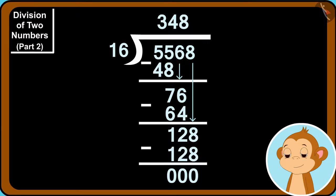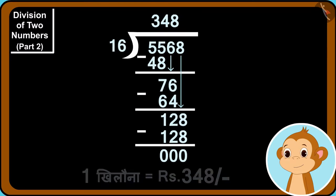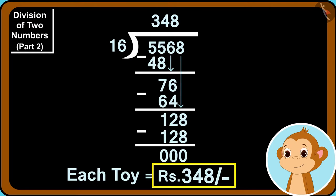5568 divided by 16 equals 348. This means, the price of each toy is 348 rupees.